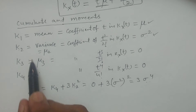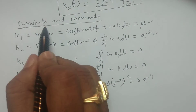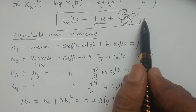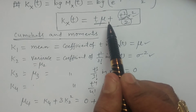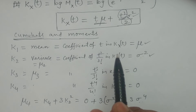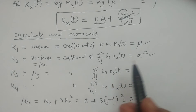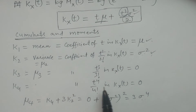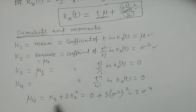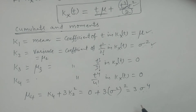Regarding cumulants: only the first two cumulants exist; all remaining cumulants k₃, k₄, k₅, k₆ etc. are 0, because there are no coefficients of t³, t⁴ etc. in K(x,t) — only coefficients of t and t² exist. Therefore only the first two cumulants, mean and variance, exist for the normal distribution. As for the moments: mean μ, variance σ², μ₃ = 0, μ₄ = 3σ⁴, and so on.